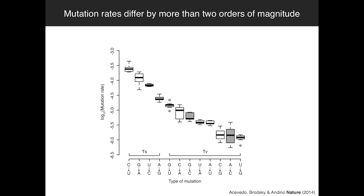What you'll notice is there's a huge difference between the rates for all the different mutation types. What makes sense out of this data is that when we look at transitions — purine to purine or pyrimidine to pyrimidine — versus transversions — purines to pyrimidines and vice versa — as expected, transitions are much more favorable than transversions. But even within these groups, we see large differences in the rates. This made us wonder what the biological rationale is for having such different mutation rates within the same virus.